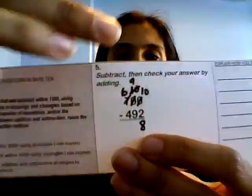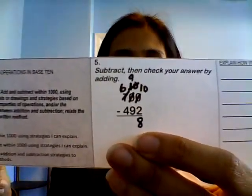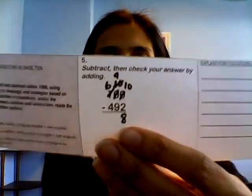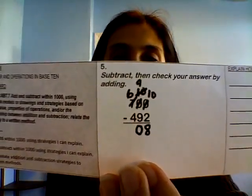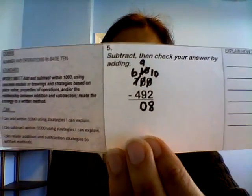10 take away 2 — what's 10 take away 2? You should know your fact families. 10 minus 2, or what number plus 2 equals 10? That's 8. And then we have 9 take away 9. What's 9 take away 9? Oh, that's so easy — that's 0.